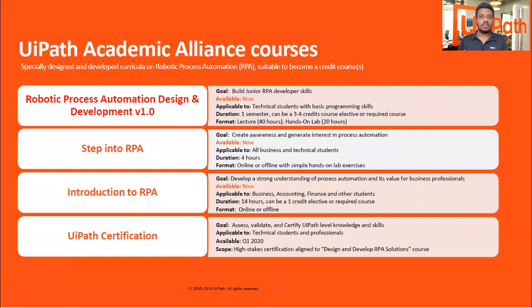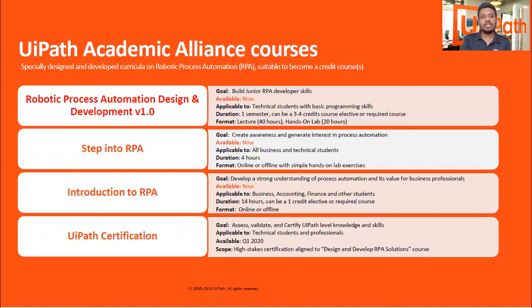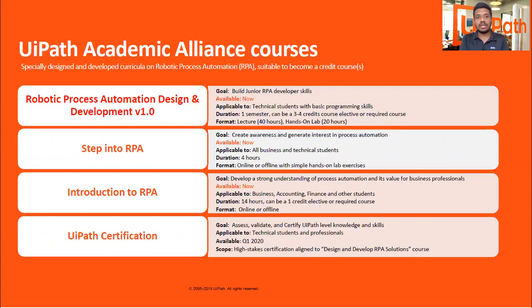As you can see on the screen, they offer different courses. The UiPath certification shown at the very bottom is already available for professionals and for technical and non-technical people, though it is mostly focused on technical students and professionals. Focusing on universities and colleges, there are three other courses mentioned here: Robotic Process Automation Design and Development, Step into RPA, and Introduction to RPA. Those are courses offered to universities for free. What Academic Alliance needs is to partner with universities so they can share their knowledge base and universities can in turn share it with their lecturers and students.